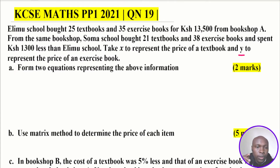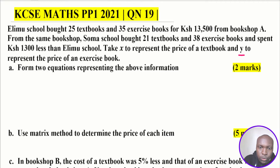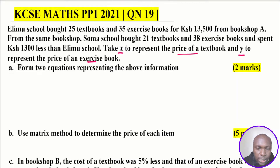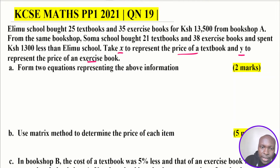That is the question. The first part asks us to form two equations representing the above information. Taking X to represent the price of each textbook and Y to represent the cost of each exercise book: there are 25 textbooks in total, the cost of one textbook is X shillings, so the total cost of the textbooks will be 25X.